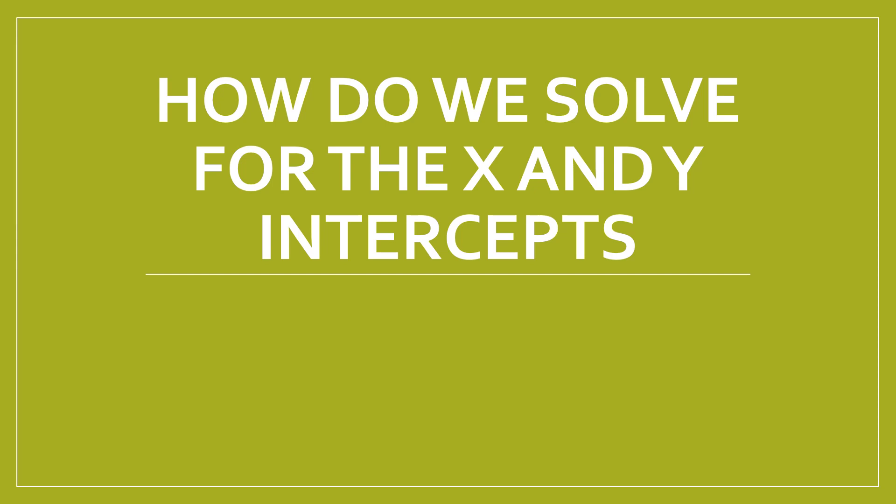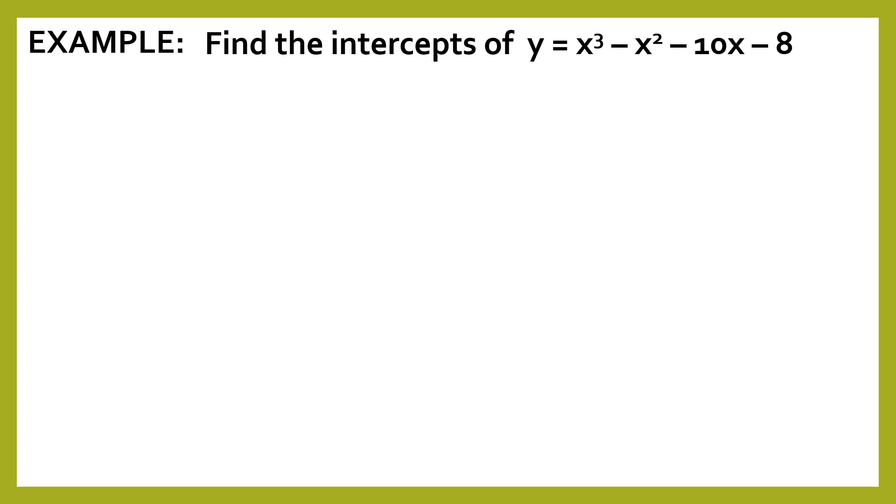How do we solve for the x and the y-intercepts? Example number 1. Find the intercepts of y is equal to x cubed minus x squared minus 10x minus 8. So first step is you factor the polynomial completely. And this one has been discussed in the previous topic. The factor of our polynomial function is y is equal to (x + 1) times (x + 2) times (x - 4).